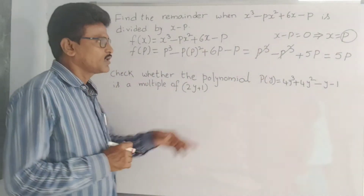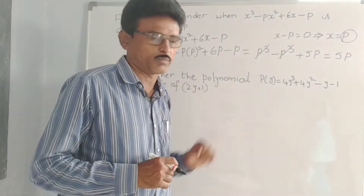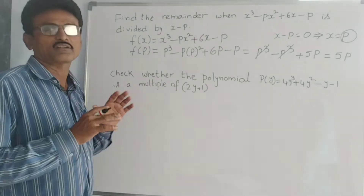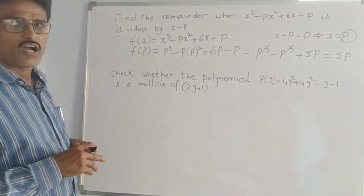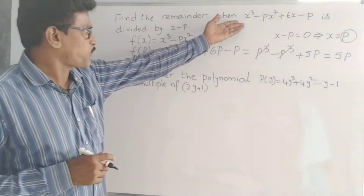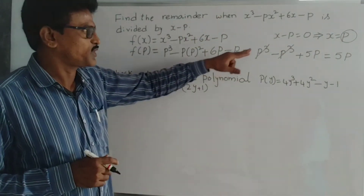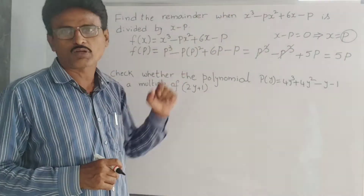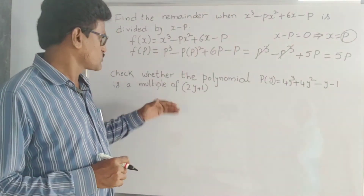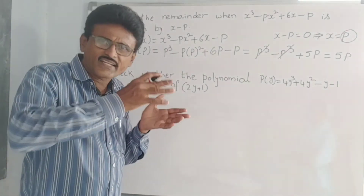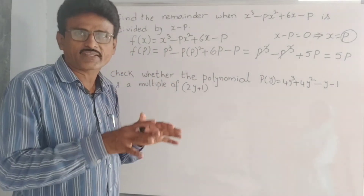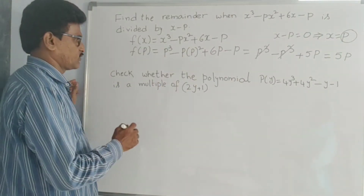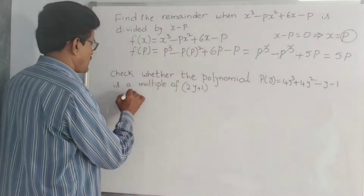Now check whether the polynomial P of Y equal to 4Y cubed plus 4Y squared minus Y minus 1 is a multiple of 2Y plus 1 or not. How to check this: if we divide by the linear polynomial and the remainder is 0, then it is a factor. If some remainder comes, it is not a factor.